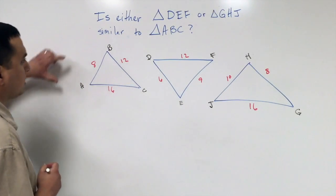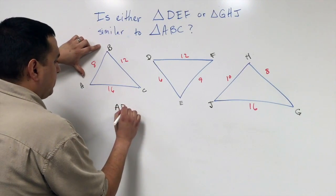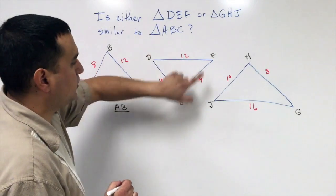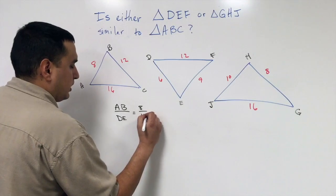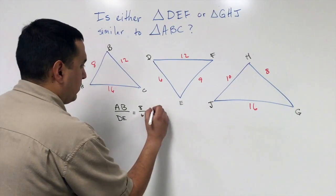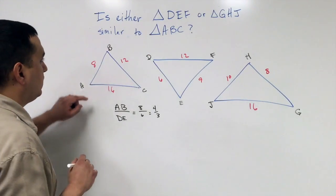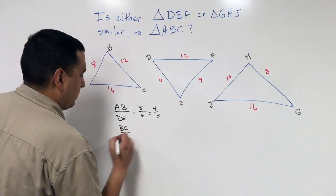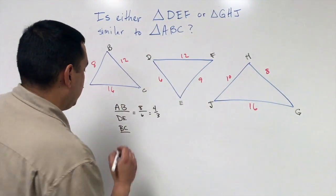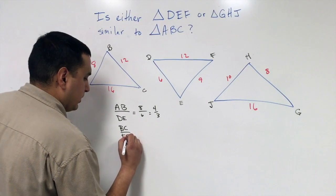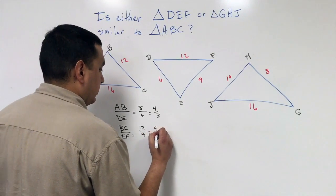What we're going to do is take the smallest side on triangle ABC, which happens to be AB, and I'll put that over the smallest side of this triangle, which is DE, and that is 8 over 6. If I reduce that, that's going to come out to be 4 thirds. We're going to do that with these other two sides. BC is my next shortest side, my medium-sized side, and then EF is the middle length of the other triangle, so that's going to be 12 over 9, which also reduces to 4 thirds.